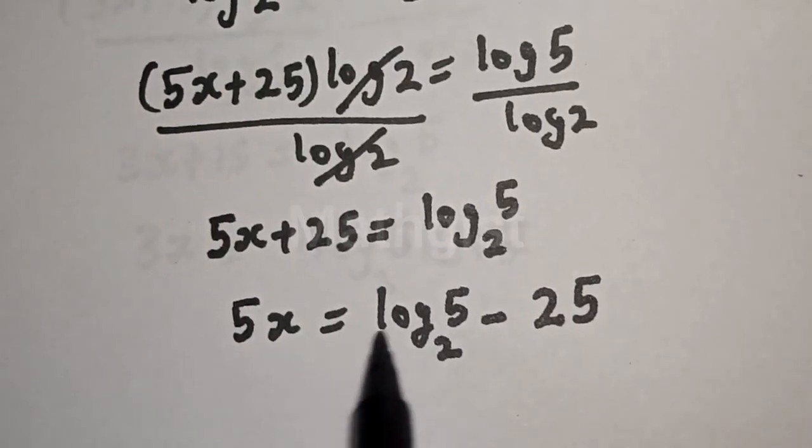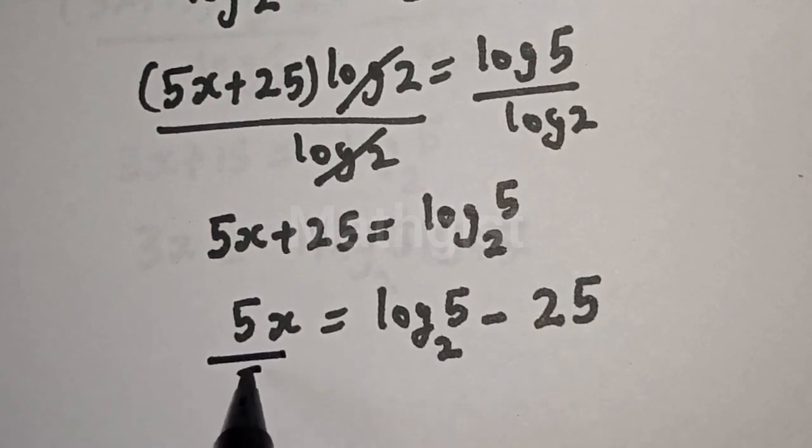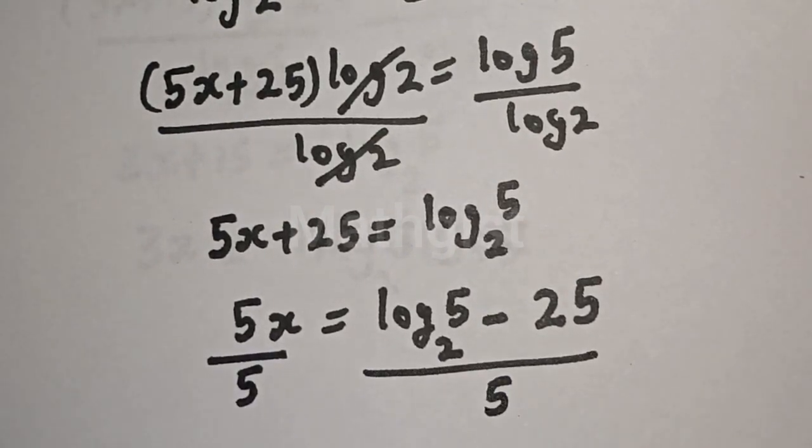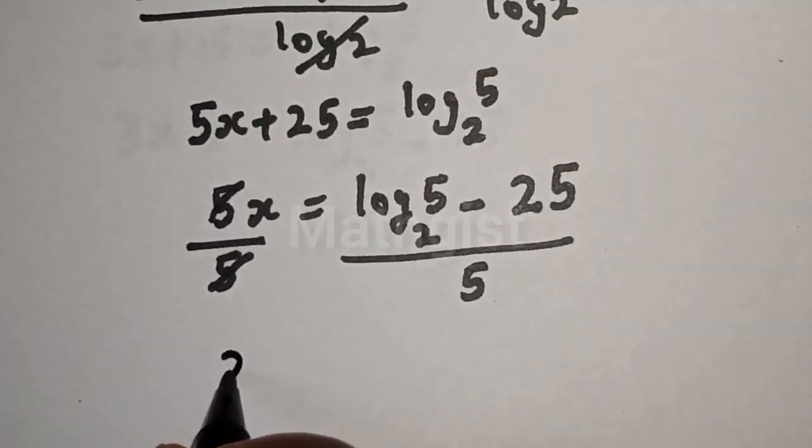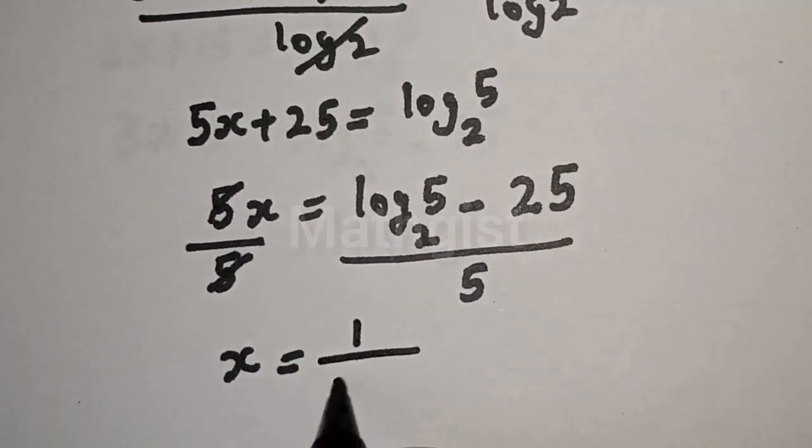Then since we are looking for the value of s, let's divide both sides by 5. So this one will cancel this. s is equal to 1 over 5,